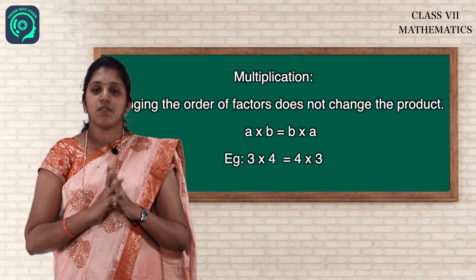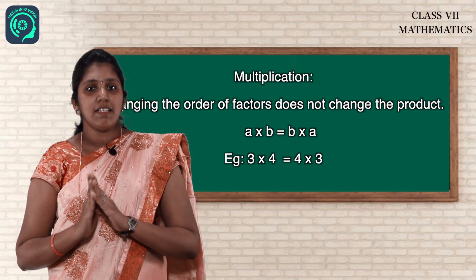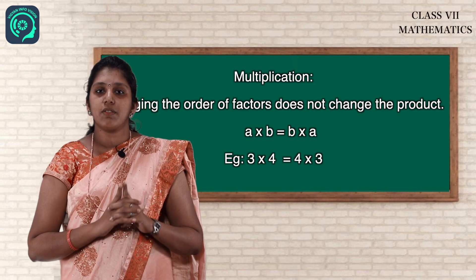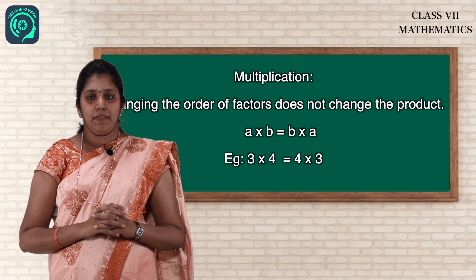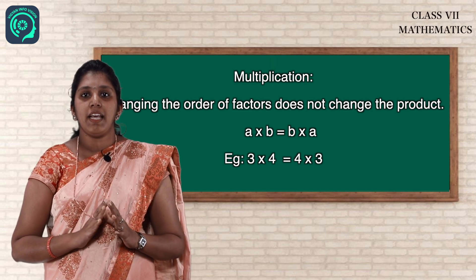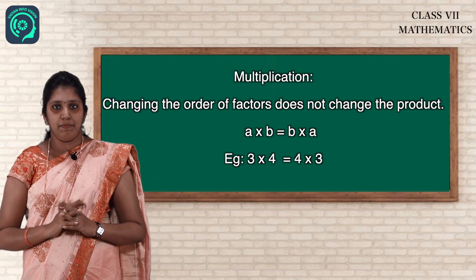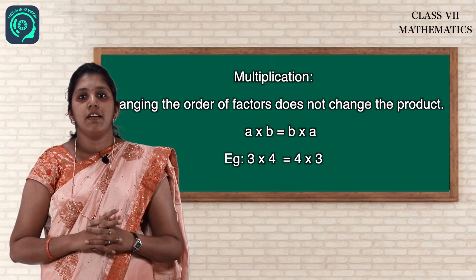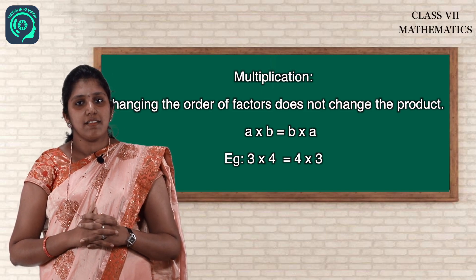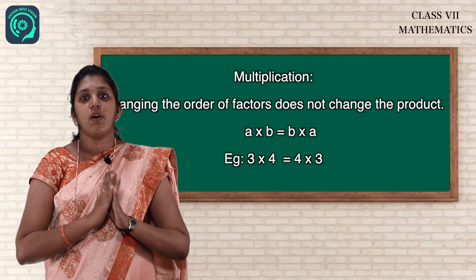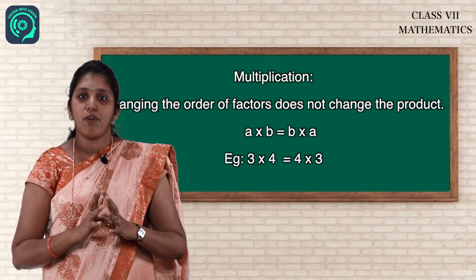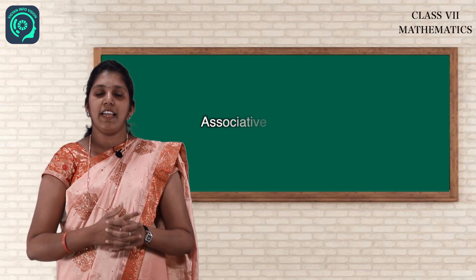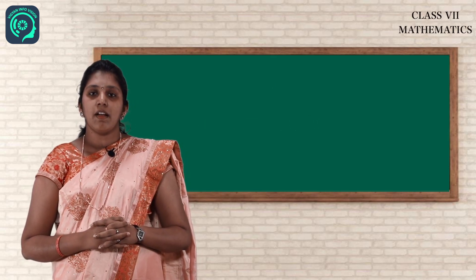Coming to commutative property for multiplication: A into B is equal to B into A, same as for addition but with the multiplication sign. For example, 3 into 4 is 12, and 4 into 3 is also 12. So changing the order of factors does not change the product. We can say commutative property holds good for multiplication.